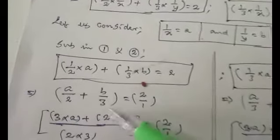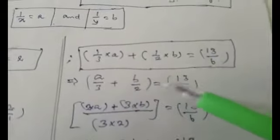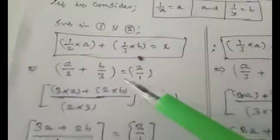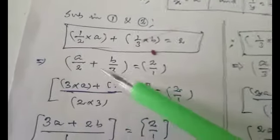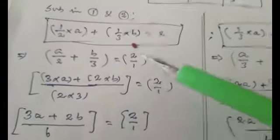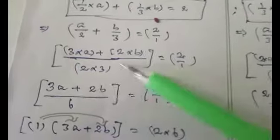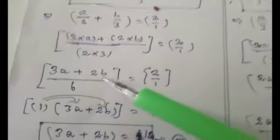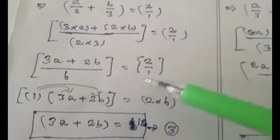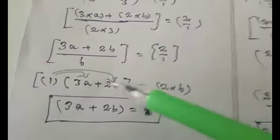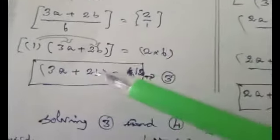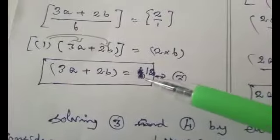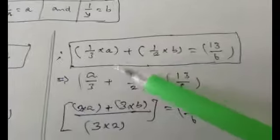Now simplifying equation 1 by taking LCM on the left-hand side — the LCM of 2 and 3 is 6 — by cross multiplication we get 3a + 2b = 2. So 3a + 2b divided by 6 equals 2/1. Cross multiplying: 1 · (3a + 2b) = 2 · 6, giving 3a + 2b = 12. Make it equation number 3.